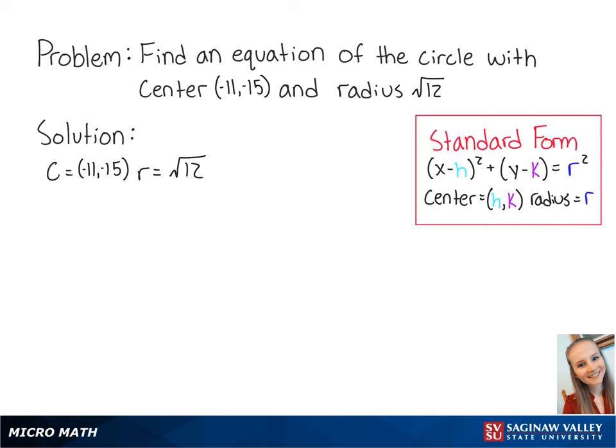The standard form of a circle shows us that the center is (h, k). So here, our h equals -11, and our k equals -15. Now that we have our h, k, and r,